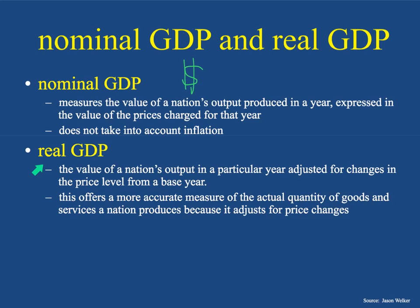So economists have come up with something called real GDP, which is the value of a nation's output in a particular year adjusted for changes in the price level from a base year — and that price level is inflation. This offers a more accurate measure of the actual quantity of goods and services the nation produces because it adjusts for price changes.